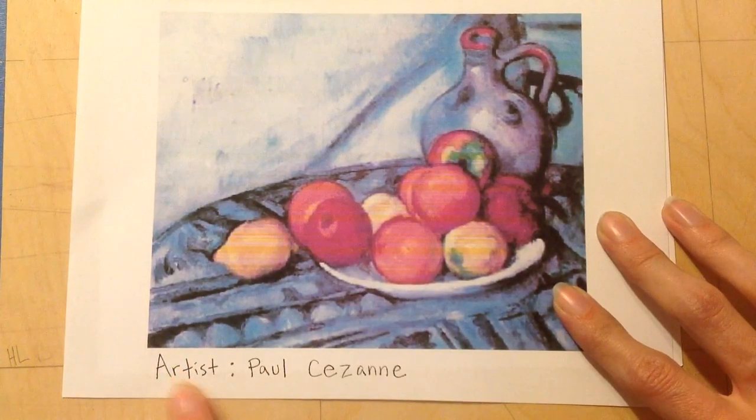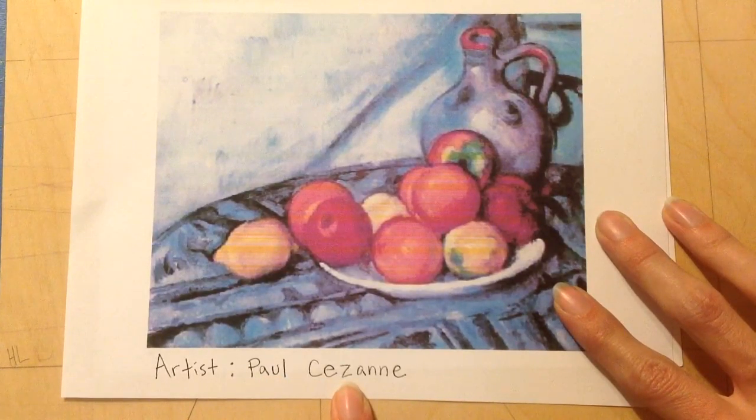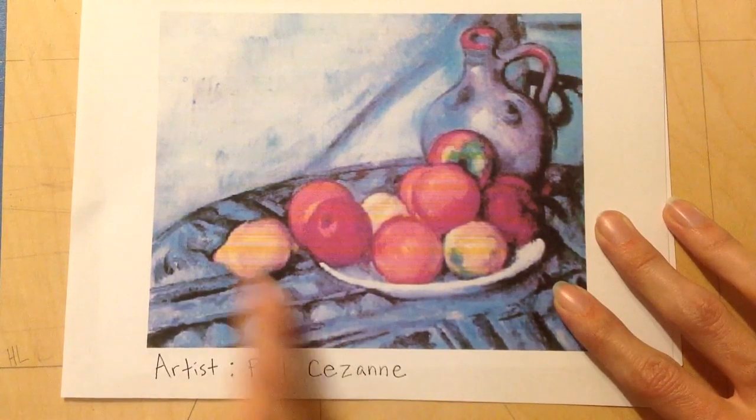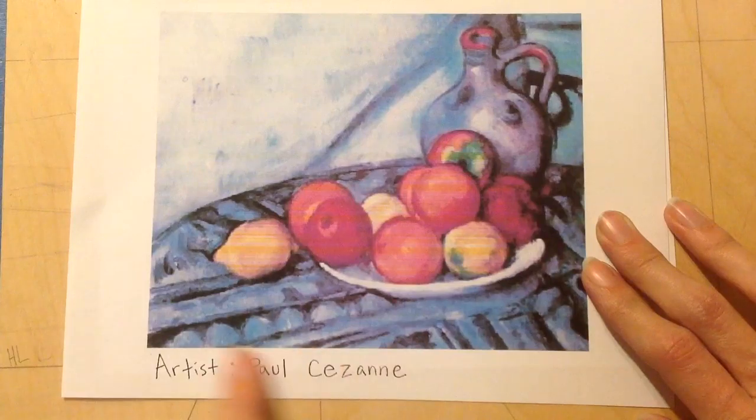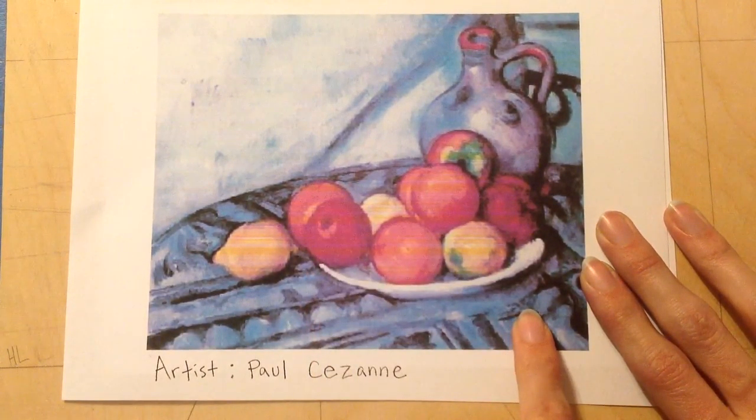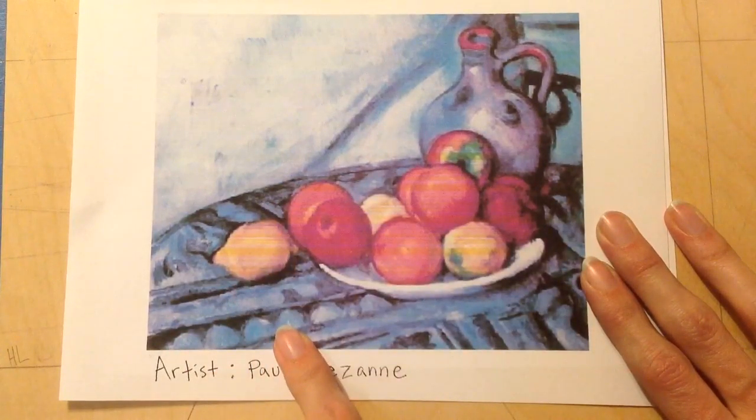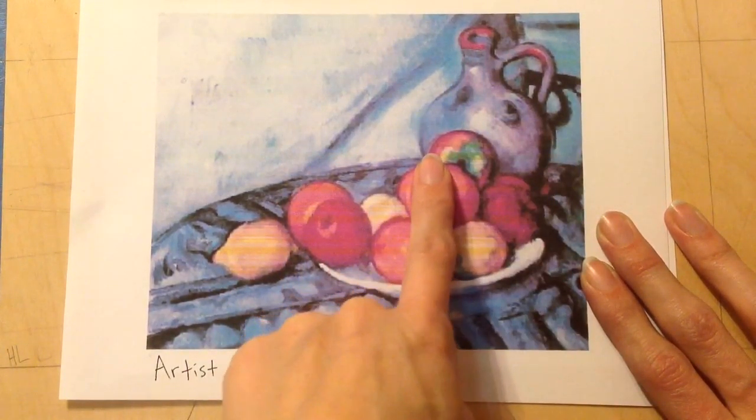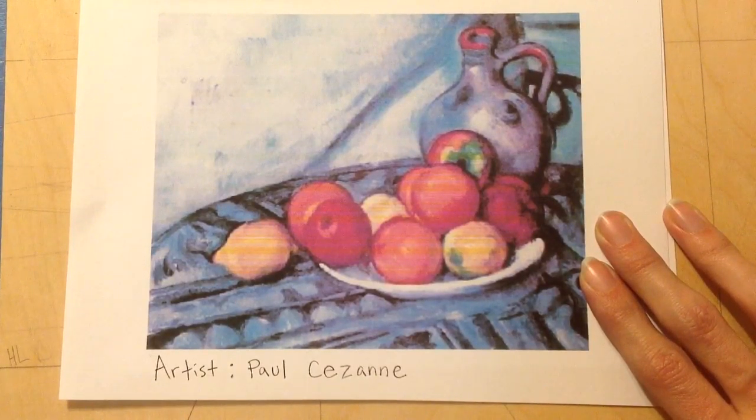The artist here is Paul Cezanne. And Paul Cezanne made all these different kinds of still life pictures of fruit. A lot of times it was on a table with fabric, and it might have a jug or a vase or something else in the picture as well.